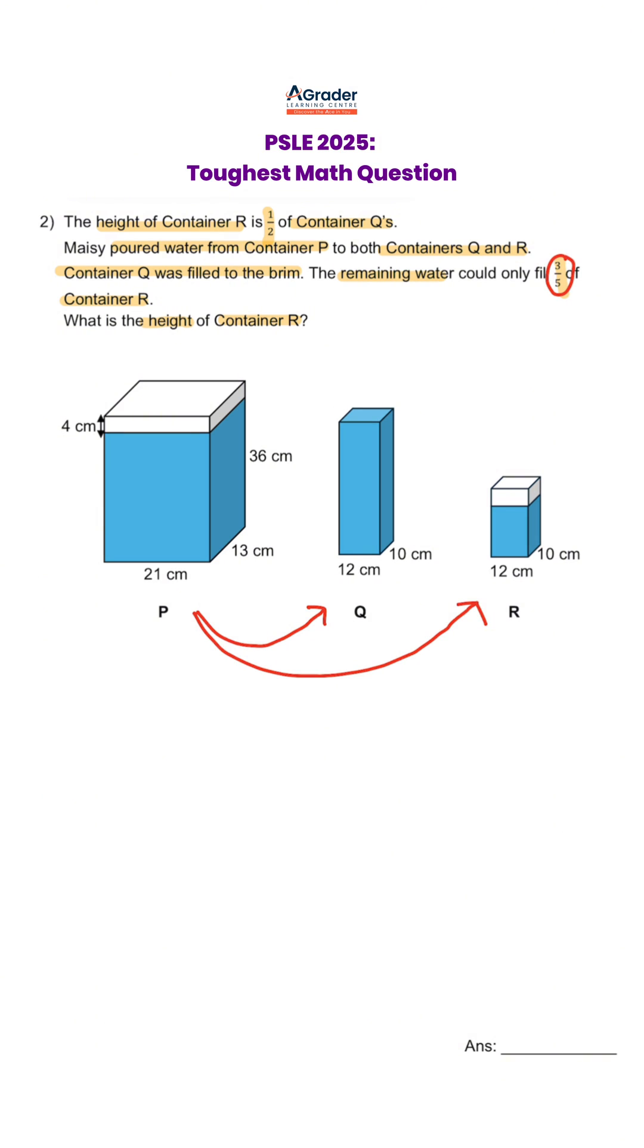In this question, the 3/5 fraction means that 5 units as the denominator is actually the capacity of container R, and 3 units is where it filled. The next fraction, half, states that the height of container R is half of container Q, which means the height of container Q is actually 10 units.